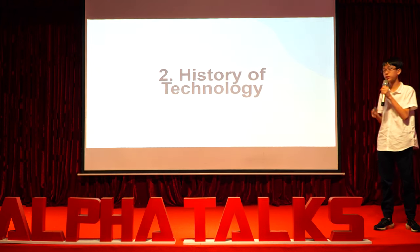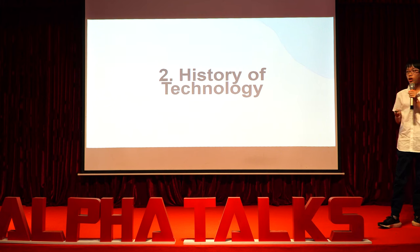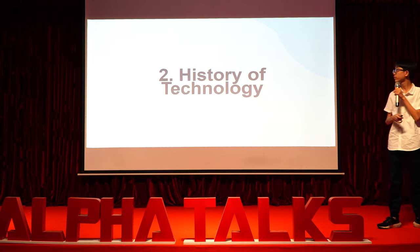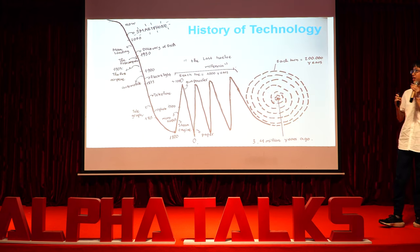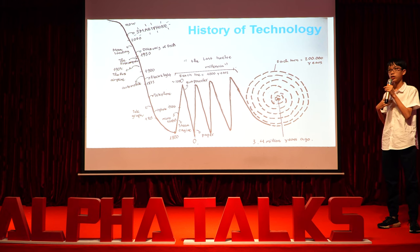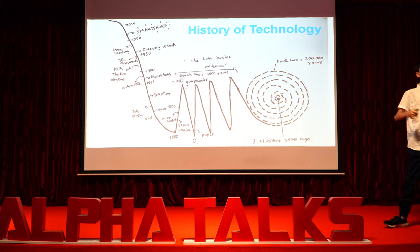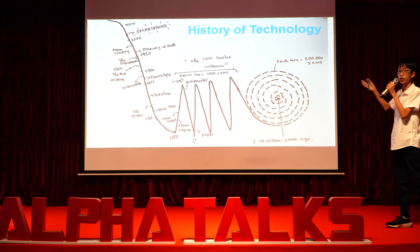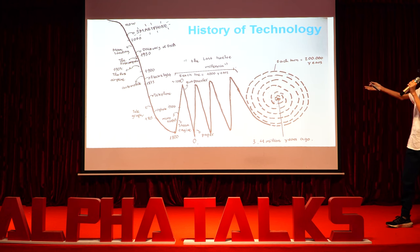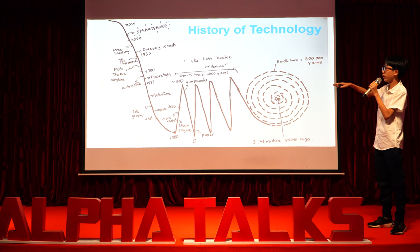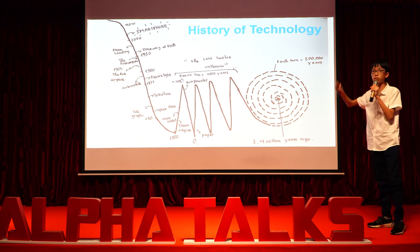Now that we have the definition of technology, next we have the history of technology. Here I have a little timeline that I made myself, using a website called OurWorldInData. The timeline is presented in three parts. First, the part going around in a circle. Secondly, we have the part going in a zigzag line. Third and finally, we have the part going horizontally.